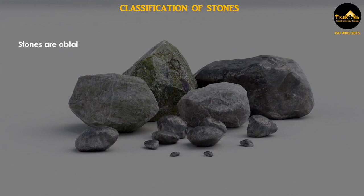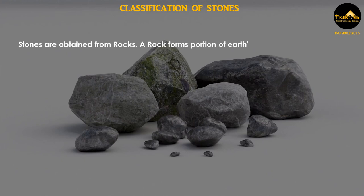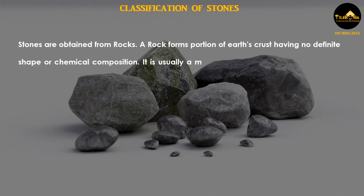Stones are obtained from rocks. A rock forms a portion of the earth's crust having no definite shape or chemical composition. It is usually a mixture of two or more minerals and is not homogeneous.